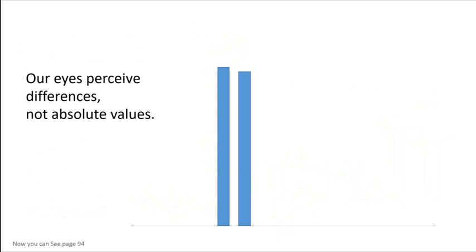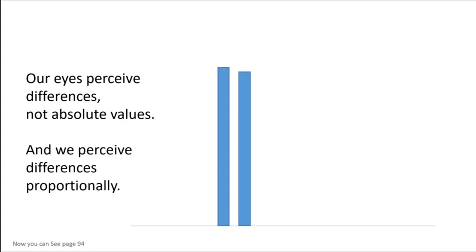Our eyes perceive differences, not absolute values — that's what's easiest for our brain to do. And it's important to know that we perceive differences proportionally, so the difference between two bars seems greater when they're smaller, because we're looking at the percent difference. This is another reason why it's so important to have bar charts that start at zero.